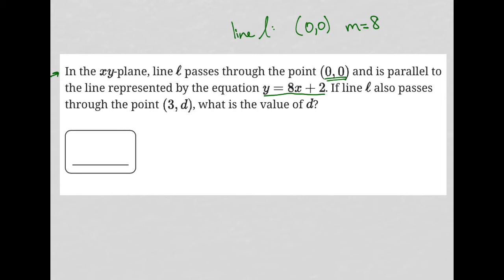How do we know that its slope is 8? Well, because it's parallel to the line that has this equation. If line L also passes through the point (3,d), so we also know that it passes through (3,d), what is the value of d?